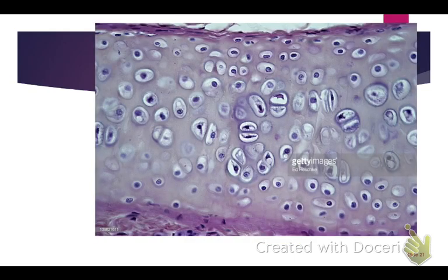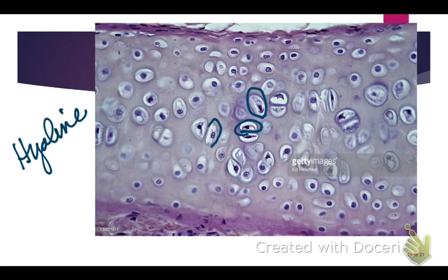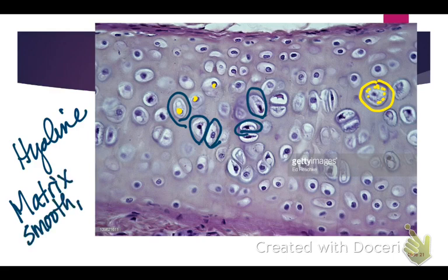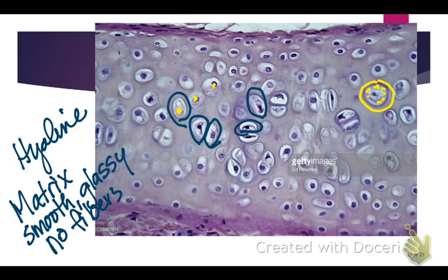My favorite image — can anyone identify this? It is hyaline cartilage. You can see the lacunae with cells inside them; switching to yellow, you can see individual nuclei inside the cells within each lacunae. Hyaline cartilage is distinguished by having a matrix that is smooth and glassy in appearance with no fibers — you don't see any lines running through it like you would in fibrous cartilage.